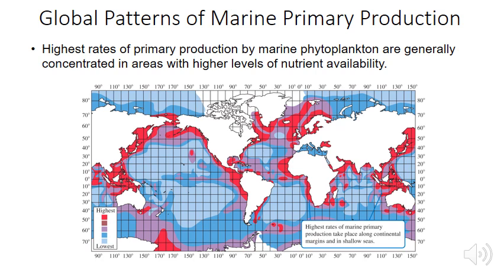Nutrient availability is also the main factor governing primary production in marine habitats. A world map of ocean primary production shows the highest values along coastlines, where runoff from land delivers nutrients and physical disturbance flushes up bottom sediments. There is also increased nutrient availability where upwelling brings nutrient-laden waters from ocean depths to the surface, concentrated along the west coasts of continents due to prevailing winds and water movements.